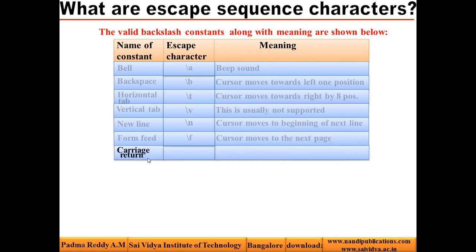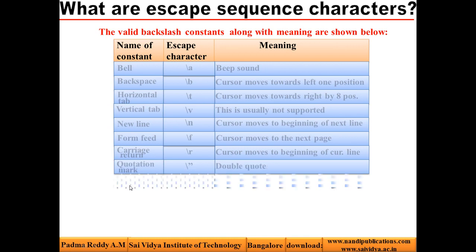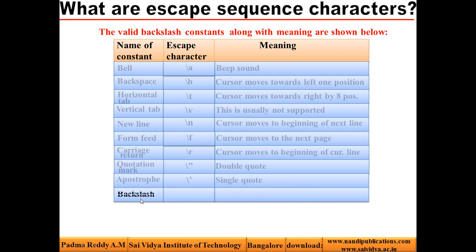Look at the next constant: carriage return. It is denoted by \R. When printed, the cursor moves to the beginning of the current line. Look at this constant: quotation mark. It is denoted by \" (backslash double quote). When printed using printf function, we get a double quote. The next constant is apostrophe, denoted by \' (backslash single quote). When printed, we get a single quote on the screen. Look at the next constant: backslash. It is denoted by \\ (double slash). When printed, we get a single backslash character on the screen.